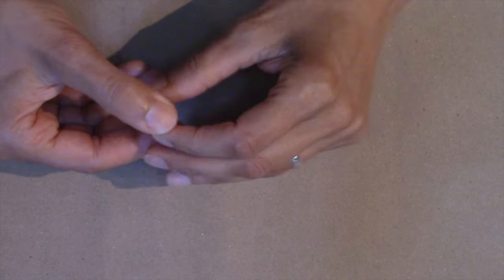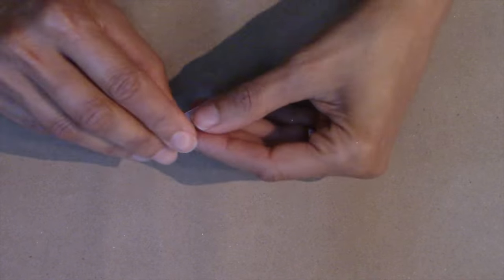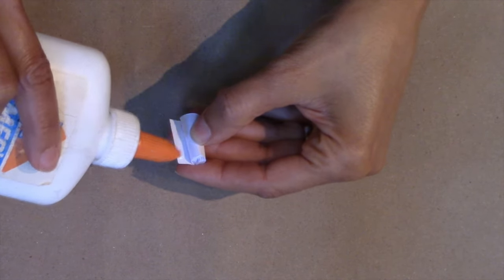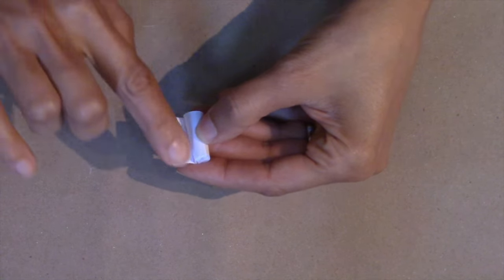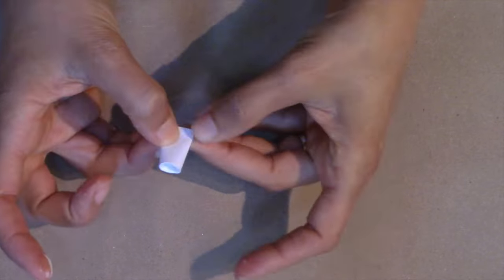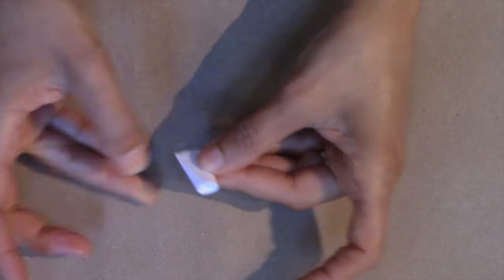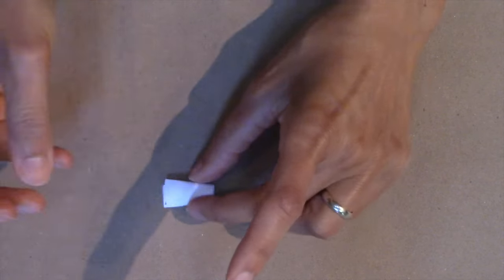This time, you will need to pinch the tube together on one end to flatten it. Apply glue to the edge to seal it. Make four of these.